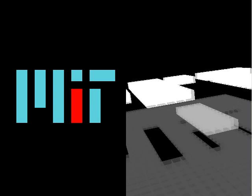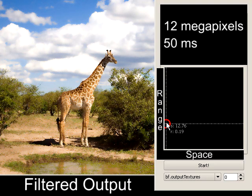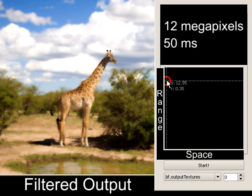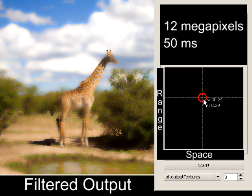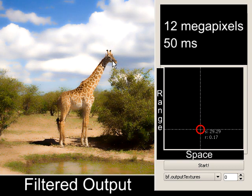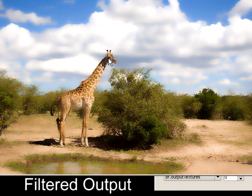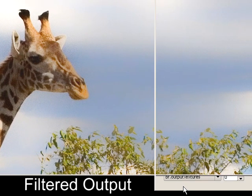We demonstrate a variety of real-time edge-aware algorithms using the bilateral grid. We demonstrate real-time bilateral filtering on a noisy 12MP input. The user can explore the parameter space while getting real-time feedback on the whole image. We zoom in to show the full resolution of the image.